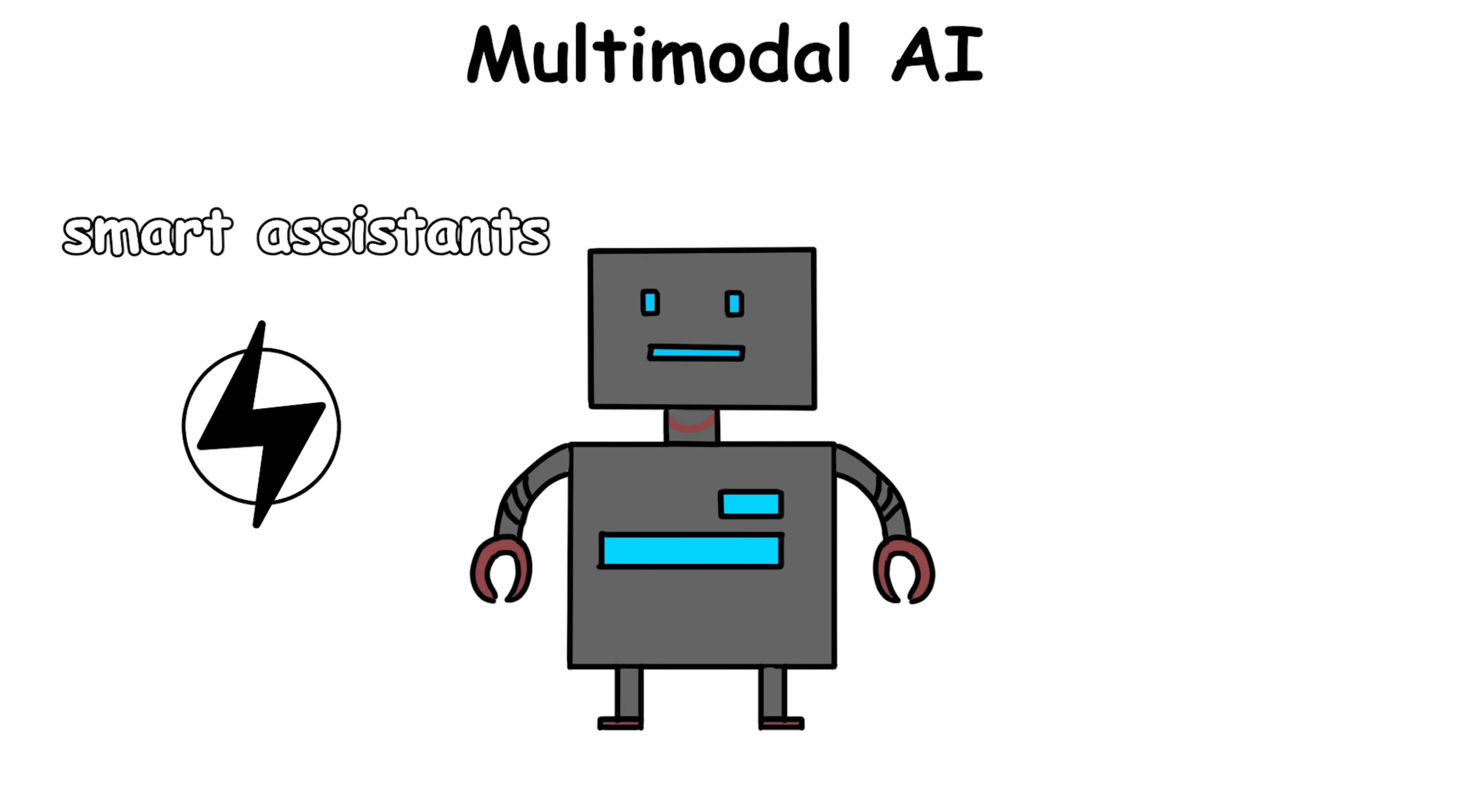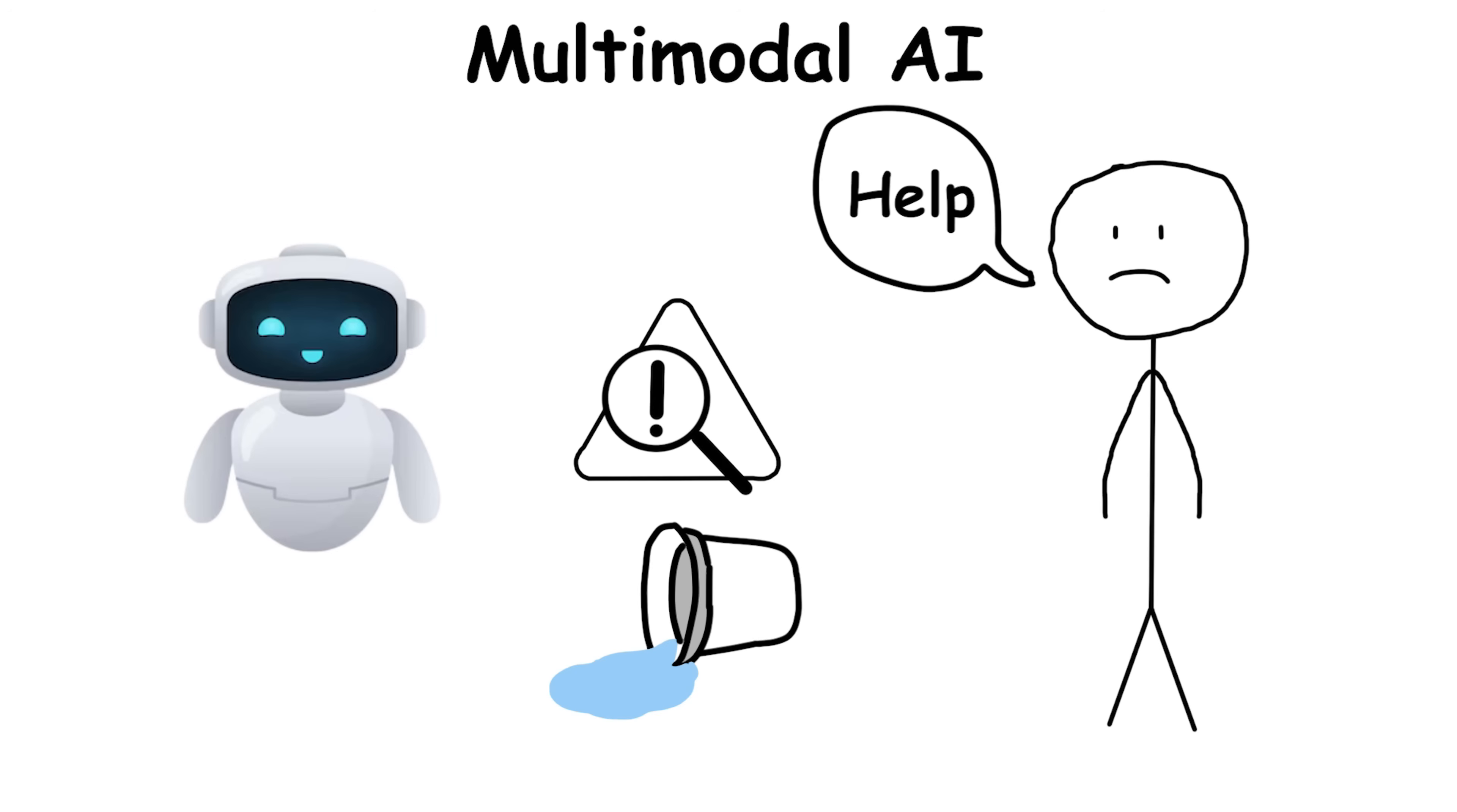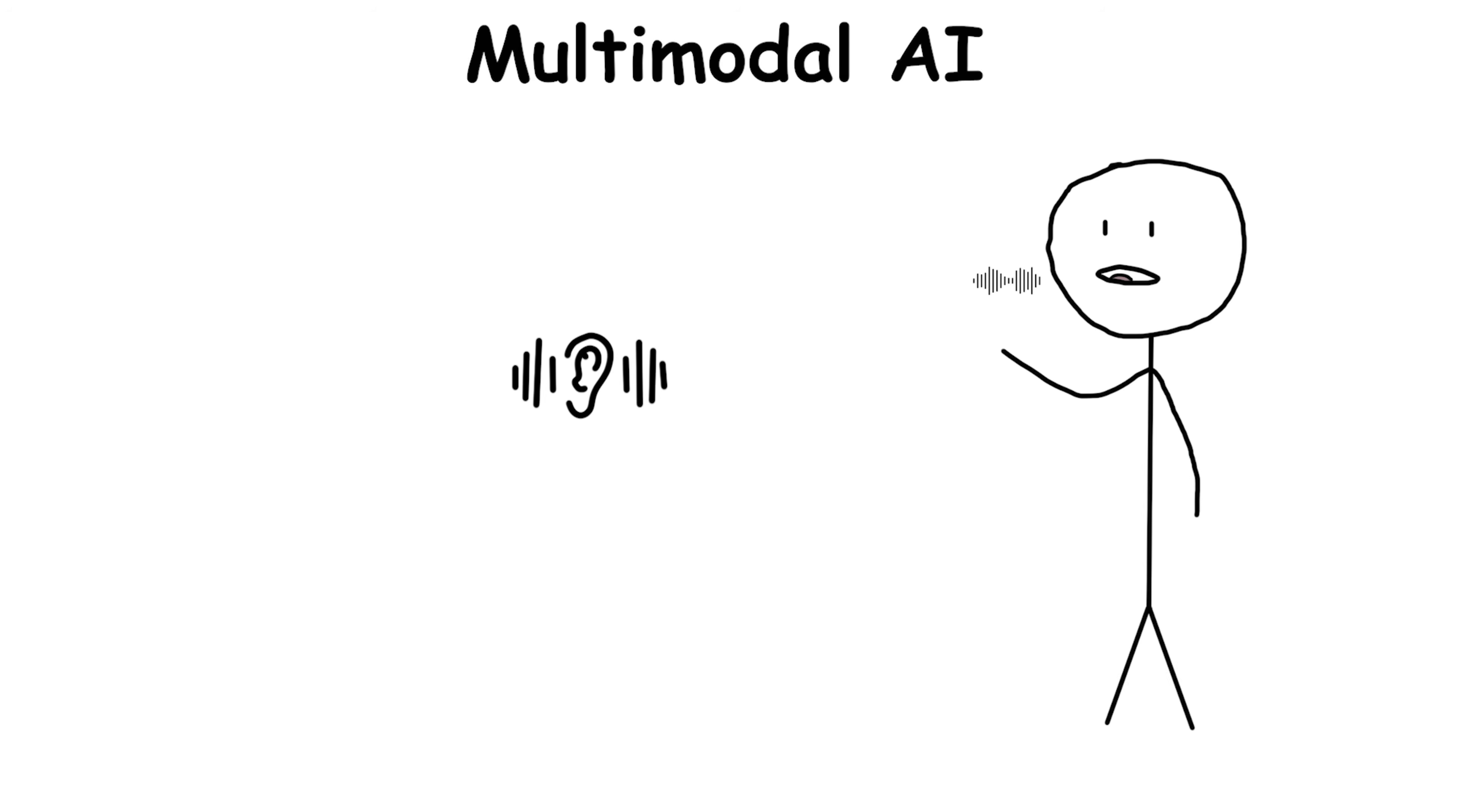It powers smart assistants that see and hear, like a robot that can identify a spilled drink while understanding a child asking for help. Multimodal AI is how Meta's Seamless M4T translates speech live while showing relevant images or how OpenAI's GPT-4o can see a photo of your fridge, listen to your voice asking for recipes, and reply with suggestions based on what's actually inside.